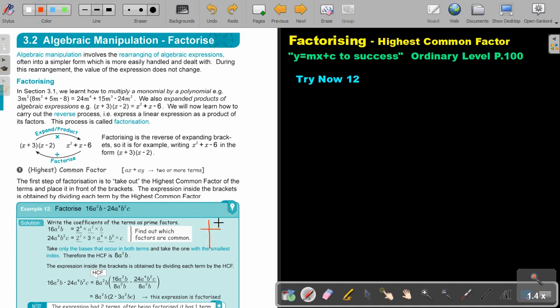Can you still remember the prime factors? For example, if I write 16 and I take the prime numbers, 2 can go in 8, 2 can go in 4, 2 can go in 2, 2 can go in 1. So, it's 2 to the power of 4. And then, find out which factors are common.